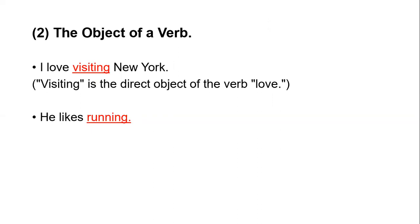We have already discussed how we can find gerunds in noun positions, because a gerund in fact plays the role of a noun. For example: 'A mother loves cooking.' What does your mother love? Cooking. Here, cooking is used as the direct object of the verb 'loves.' So gerund can be used as a direct or indirect object of the verb.